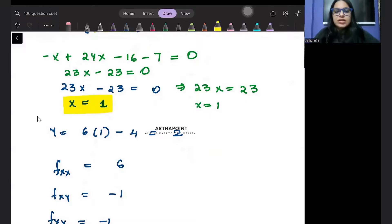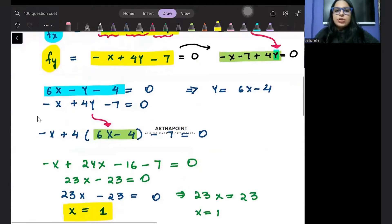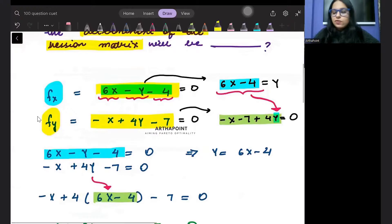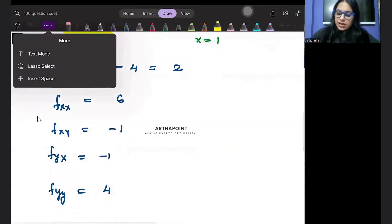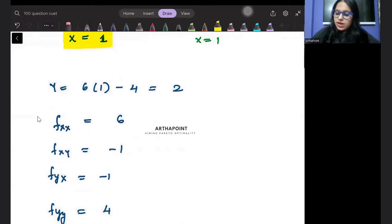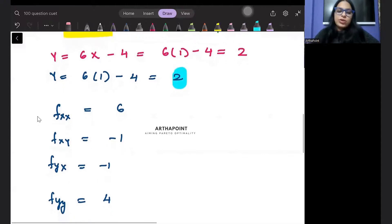Now you need to find out the value of y. So y is 6x minus 4. So instead of x, you can just say y will be 6 times 1 minus 4. 6 minus 4 is 2. So you will get 2 here. Clear?